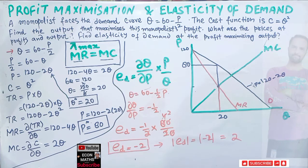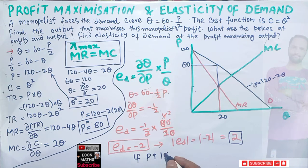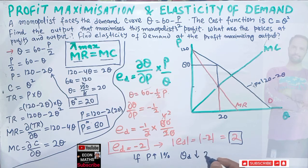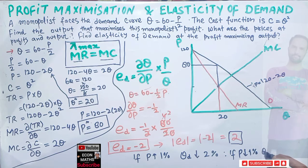We got elasticity of demand equal to -2, or in absolute value, 2. This tells us: if price increases by 1%, quantity demanded will decrease by 2%. Similarly, if price decreases by 1%, quantity demanded will increase by 2%. This indicates elastic demand at the profit-maximizing output.